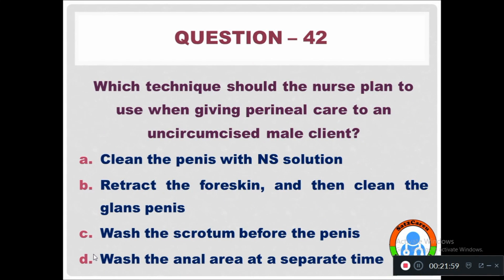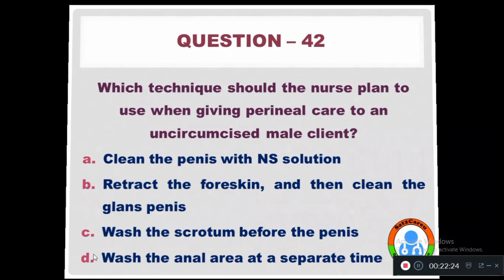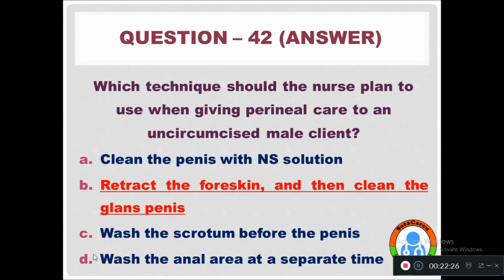Question 42: Which technique should the nurse plan to use when giving perineal care to an uncircumcised male client? Option A: Clean the penis with inner solution. Option B: Retract the foreskin and then clean the glans penis. Option C: Wash the scrotum before the penis. Option D: Wash the anal area at a separate time. The right answer is retract the foreskin and clean the glans penis.